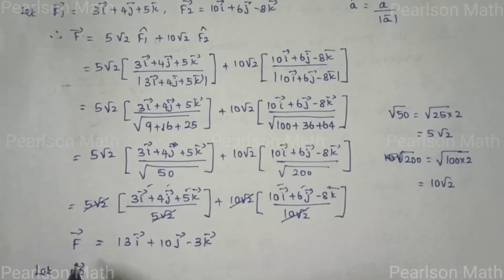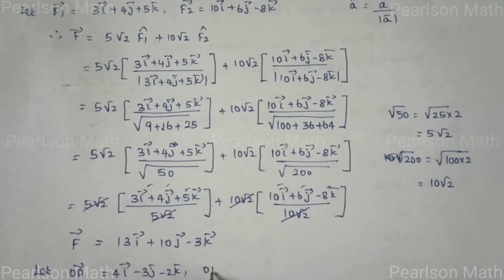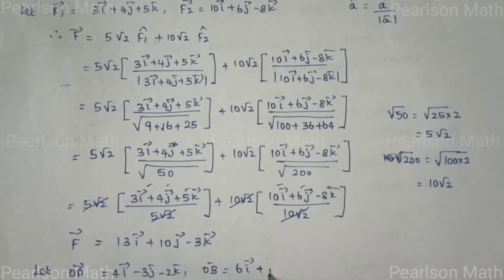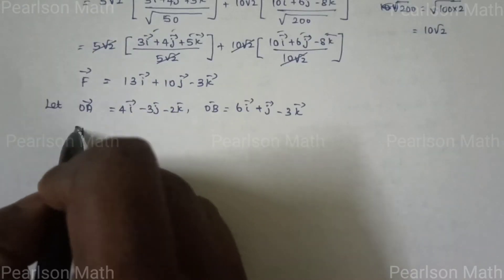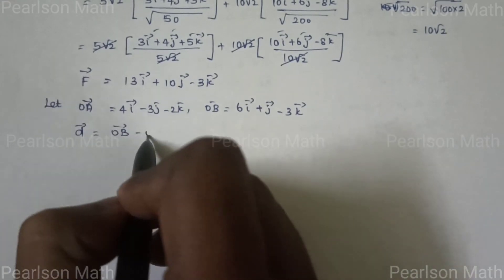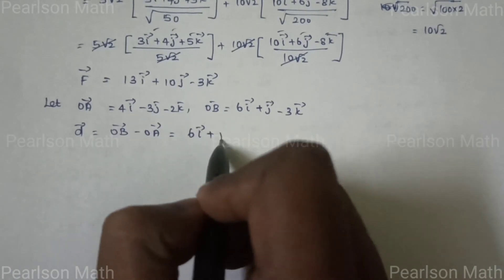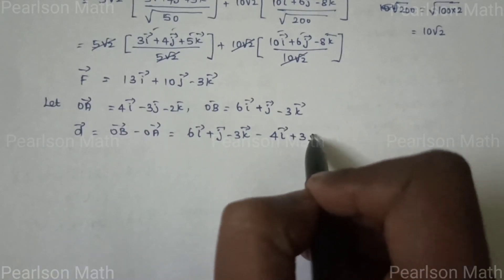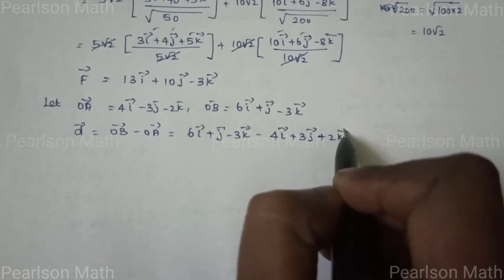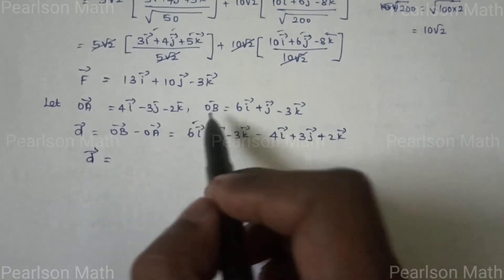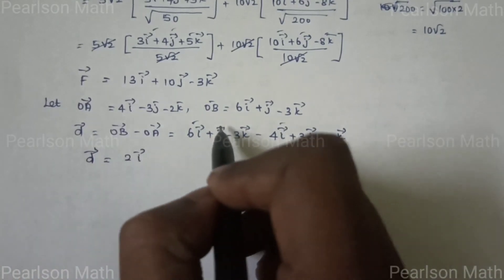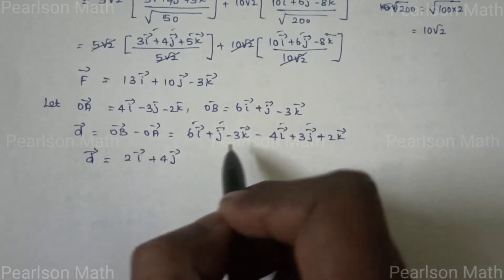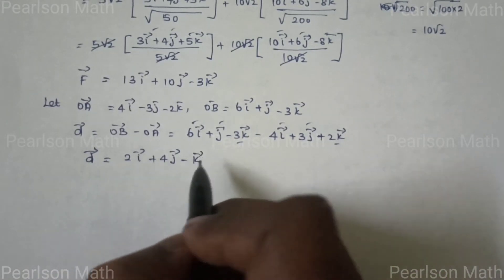Let OA vector = 4i - 3j - 2k and OB vector = 6i + j - 3k. The displacement vector d = OB - OA = (6-4)i + (1+3)j + (-3+2)k = 2i + 4j - k.